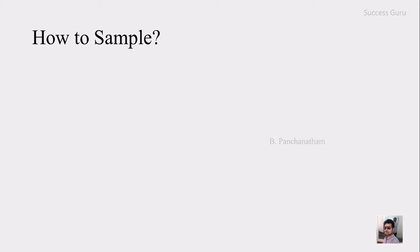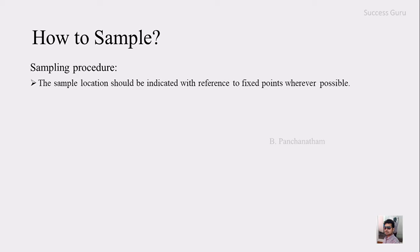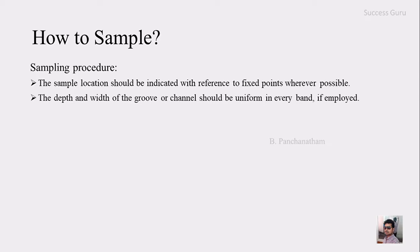The next question is: how should I sample? The following are the procedures involved. First, the sample location should be indicated with reference to a fixed point. For example, near a known landmark, or you can note down the latitude and longitude, which will be very useful for further analysis. Whenever you take a sample, you must mention the sample's location with reference to a fixed point.